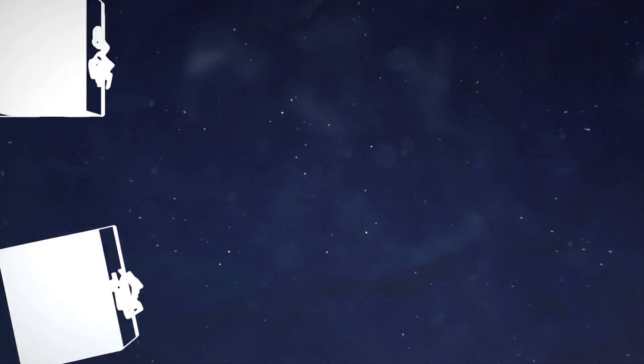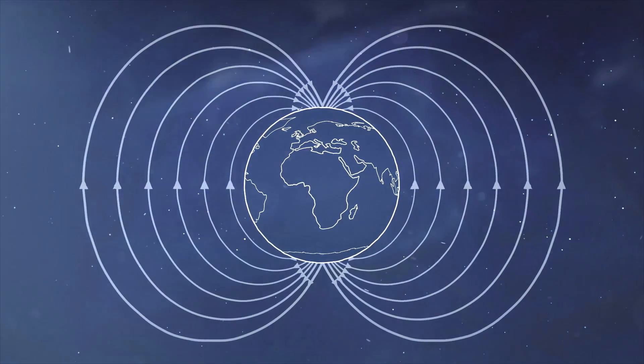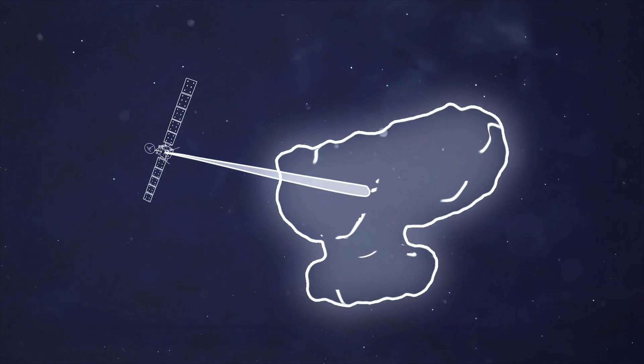It's possible that comets like 67P could have their own magnetic field. It wouldn't be a magnetic field the way the Earth's magnetic field is generated, but it's possible that there could be a fossil magnetic field locked into the cometary rocky material.